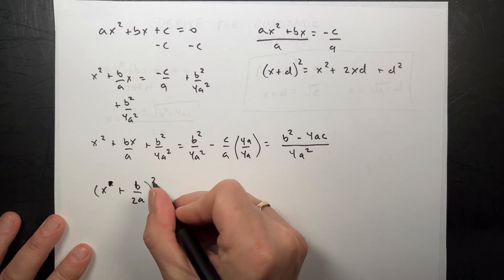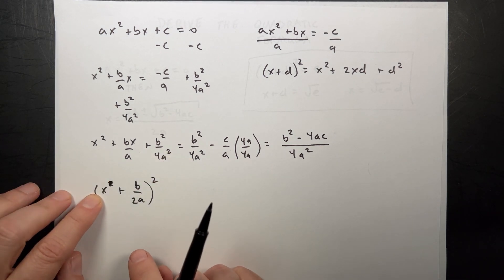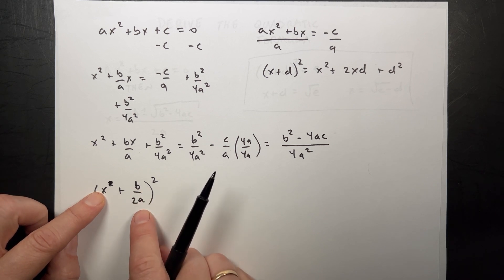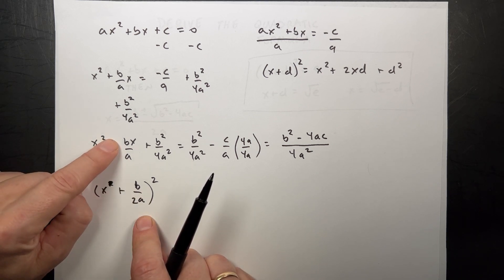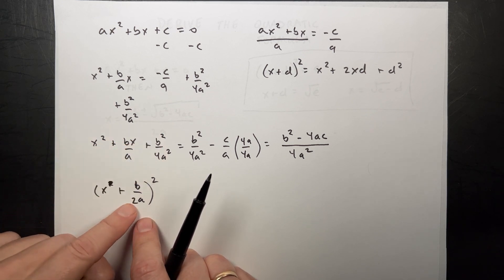No, this is x, I'm sorry, x squared. And you'll notice if I go backwards, if I square this I get x squared, boom. I get x times b over 2a, and then I get b times 2a over x. Add those together I get two of them, which is b over ax. And then if I square that I get b squared over 4a squared.